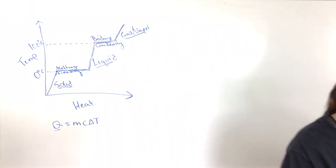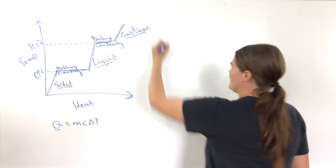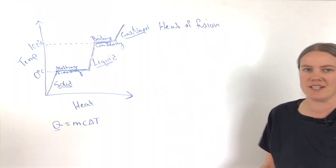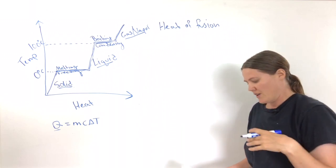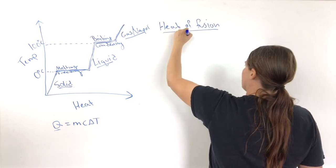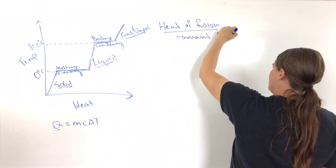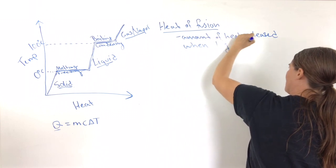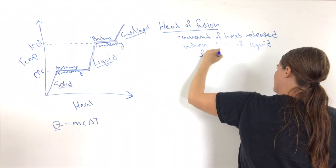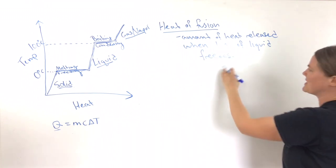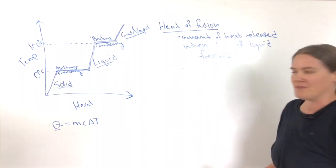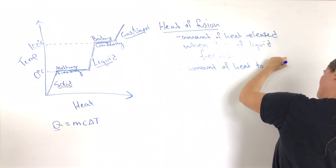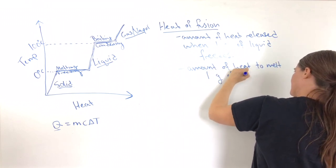I'm going to talk about that next with this term called heat of fusion. What heat of fusion is: it's the amount of heat released when one gram of liquid freezes. This is also the amount of heat you need to melt one gram of solid.